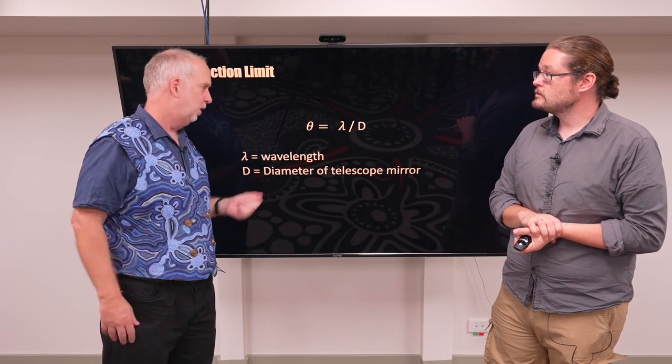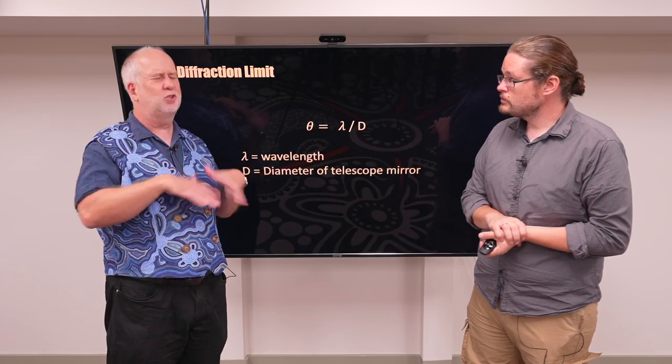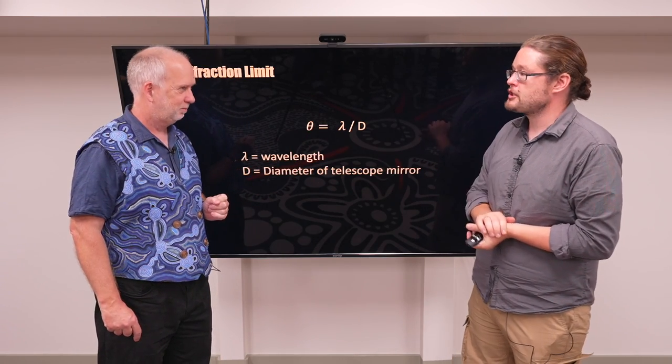So normally if you're designing a telescope, you say, well that's how good we can get. Let's see if we can polish our optics so beautifully that it matches that. And this is called the diffraction limit, the best possible limit we can get of resolving or diffracting that light through our mirror.